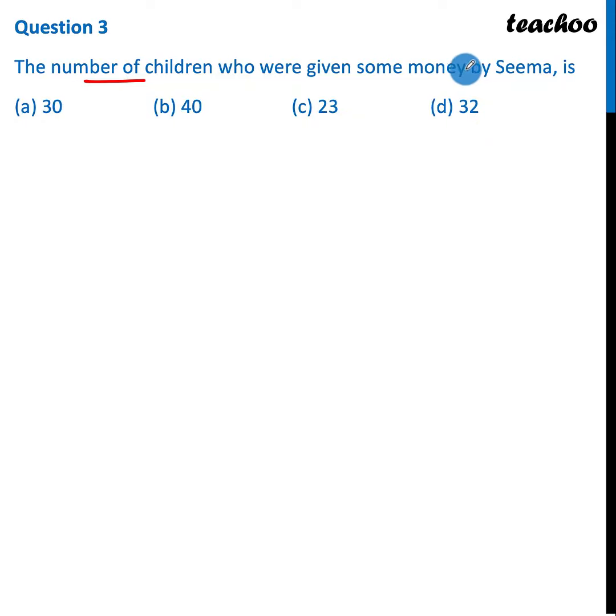Now we have the number of children who were given some money by Seema. I actually have x. So we have both x and y.